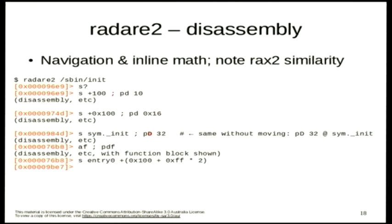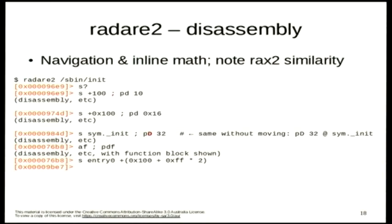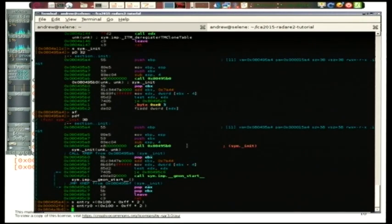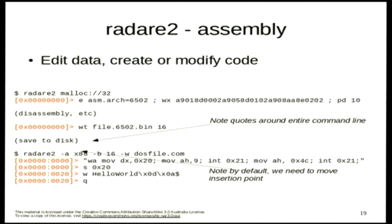As I was saying before, you can put inline math in the commands as you use them, which can be very handy. Another important feature is you can edit data, modify data or code — so it's like a generic binary editing tool. As well as files, it understands special URLs. 'malloc://' says just give me this many bytes of free memory to play with as a virtual file. If you go 'radare2 -' it gives you 512 bytes by default; in this case I'm saying give me 32 bytes, addressed automatically from zero.